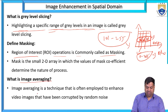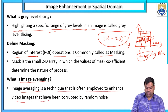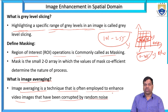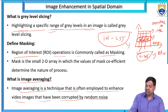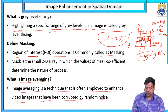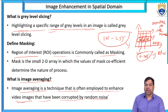Image averaging is a technique that is often applied to enhance video images that have been corrupted by random noise. Those video images that are corrupted or have noises occurred — that process is called image averaging.